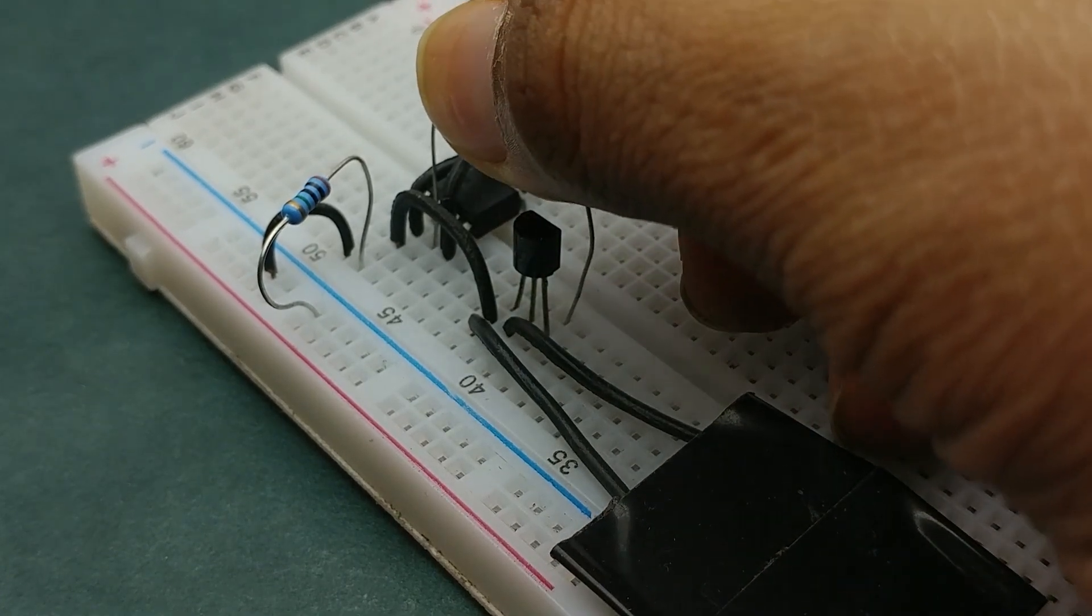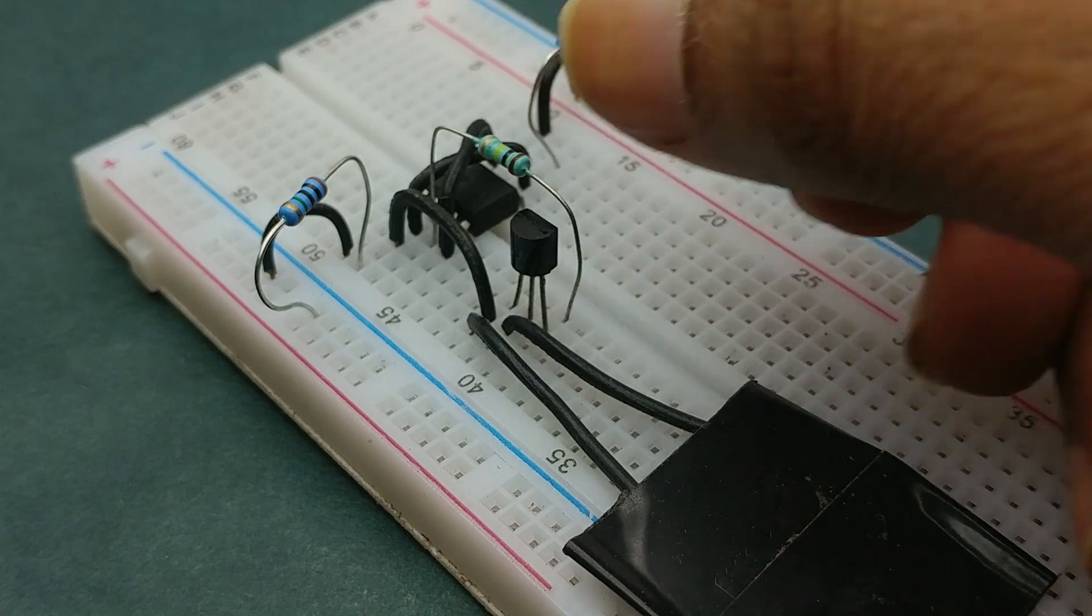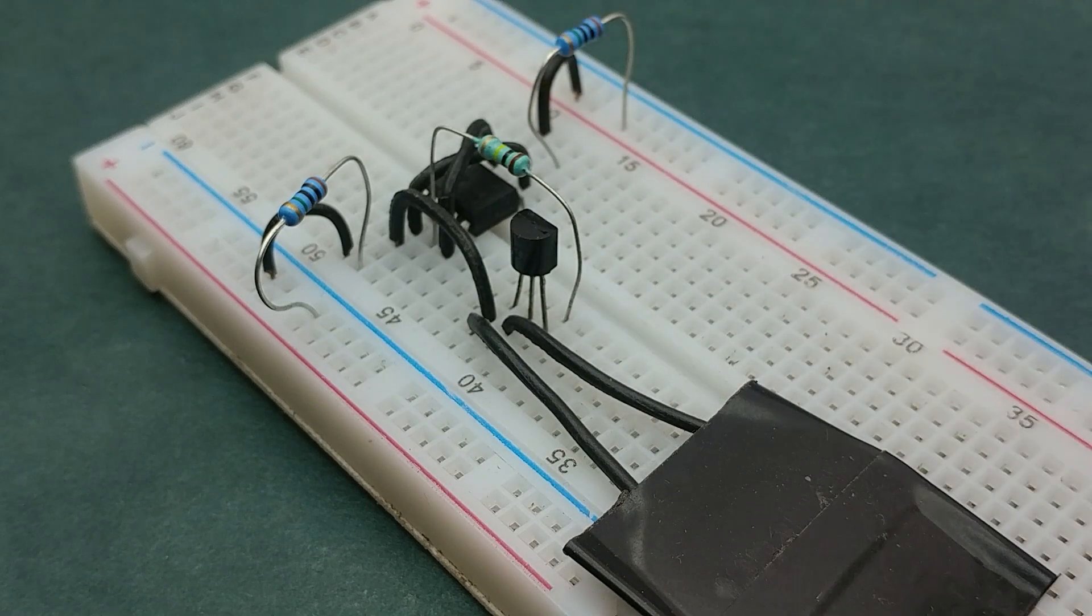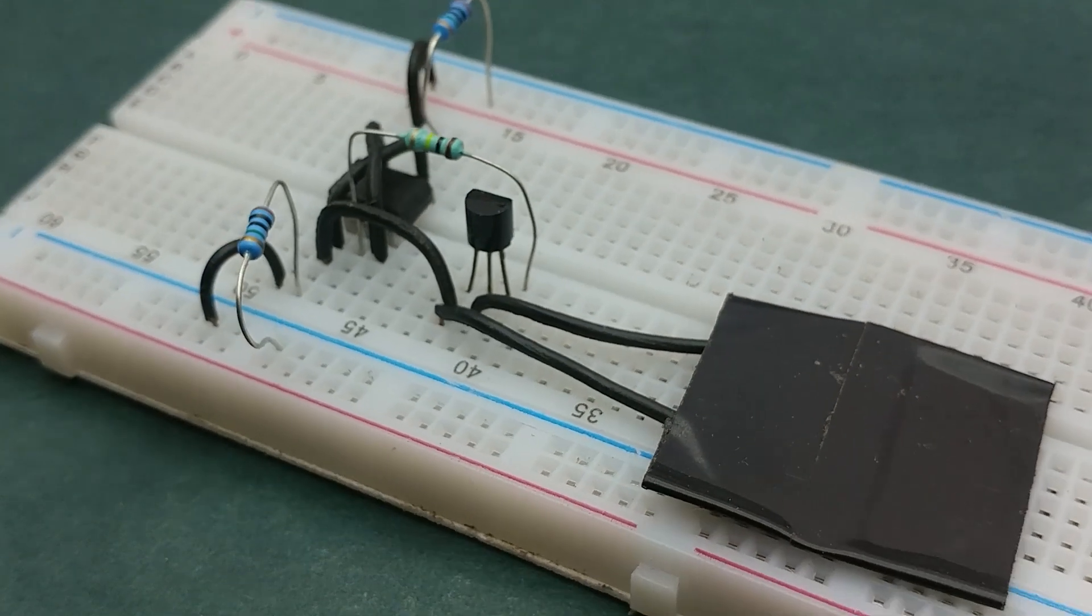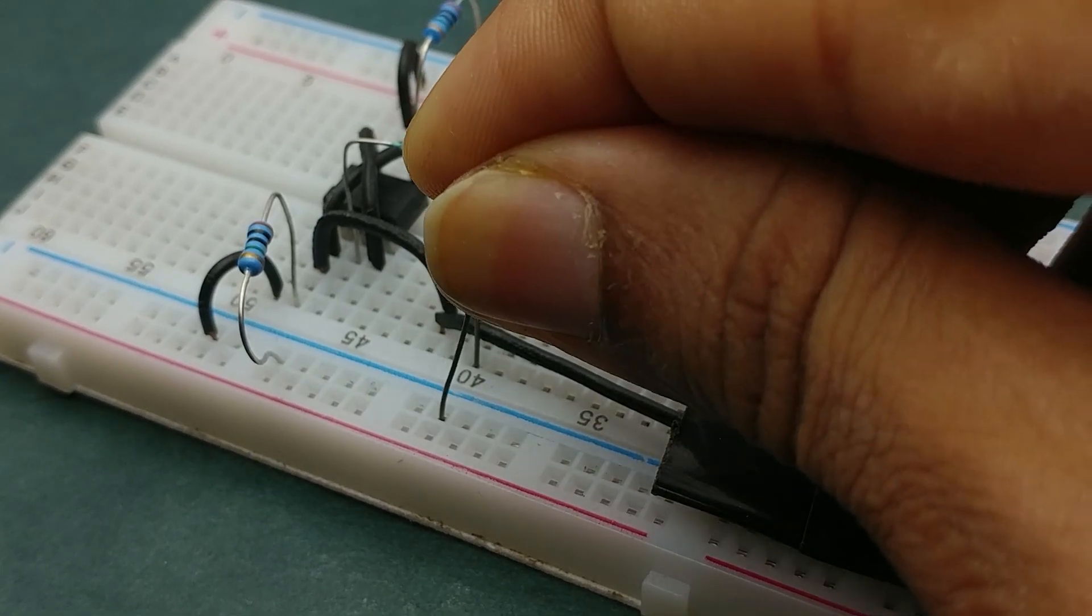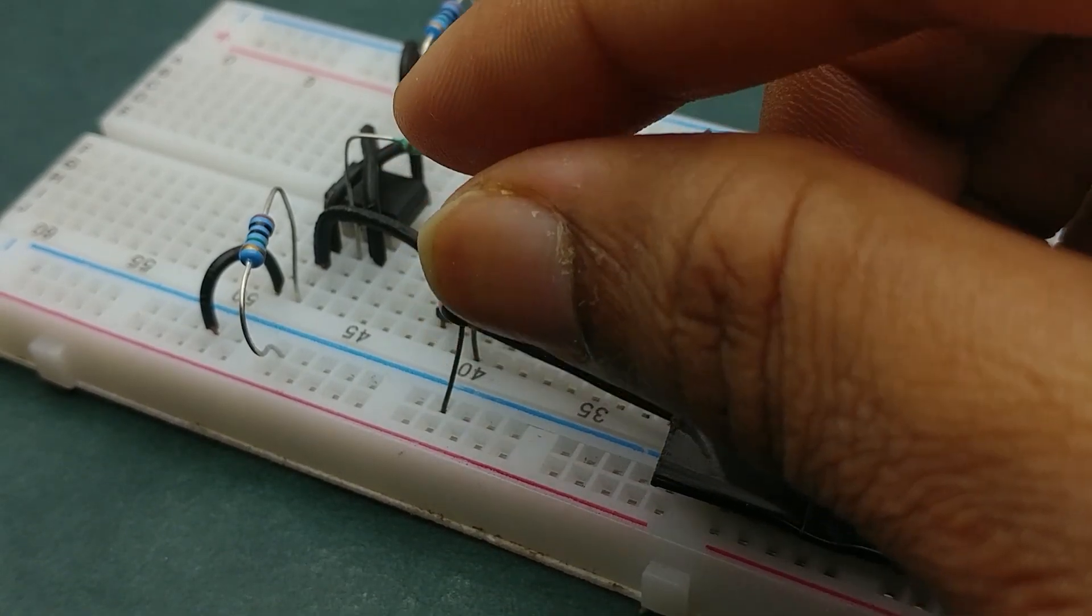Next connect a 100 Kiloohm resistor between the output of 555 timer IC and the collector pin of BC547. Now place a 10 microfarad capacitor between the collector pin of transistor and negative rail.